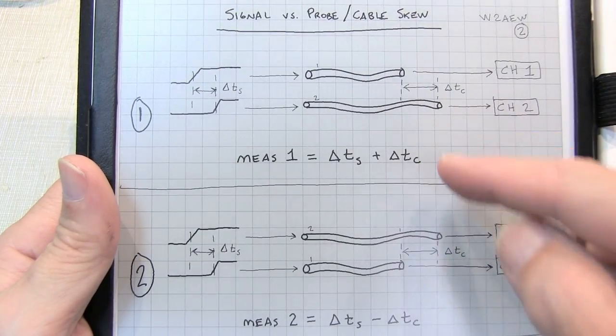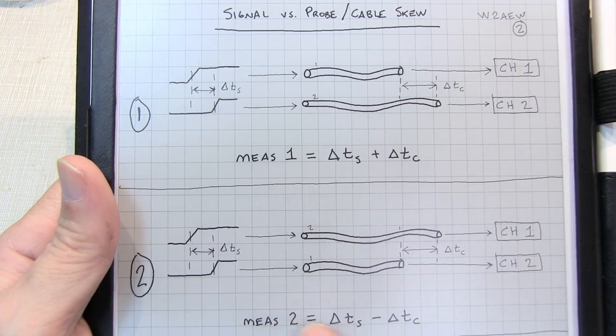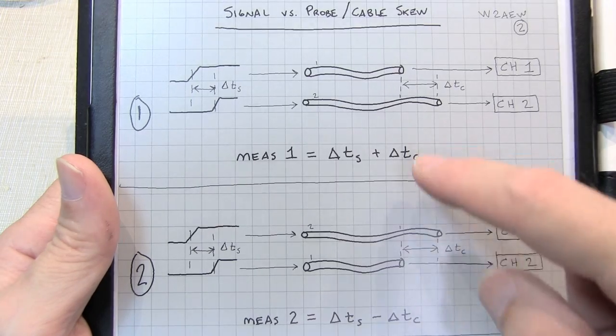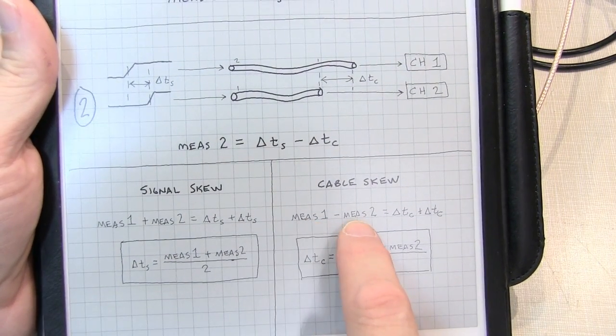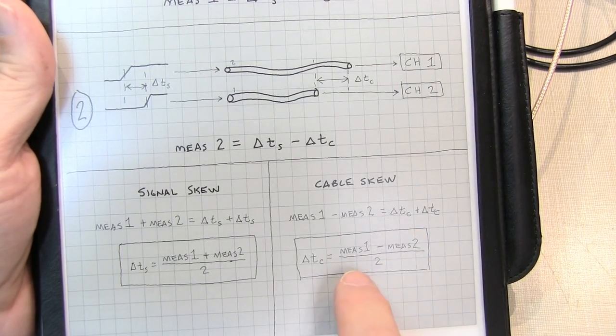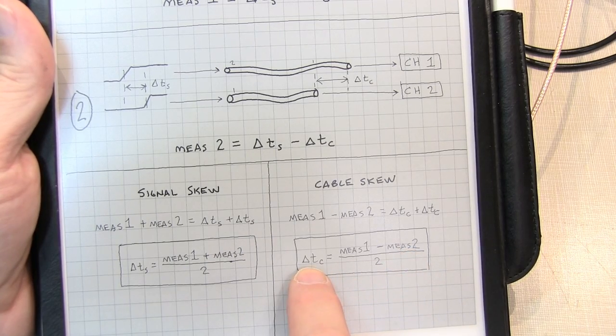Similarly, if we subtract these two, we'll have measurement 1 minus measurement 2 is equal to, well, let's see, the signal delay cancels out, and then the cable delay will double up. So we're left with measurement 1 minus measurement 2 is 2 times our cable delay, so essentially taking the difference between the two measurements divided by 2 gives us the cable delay.